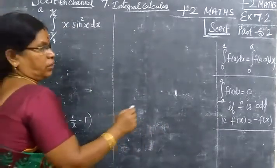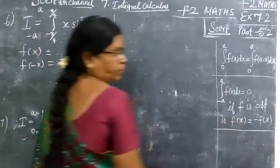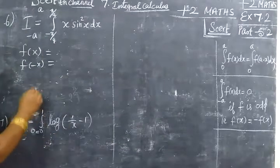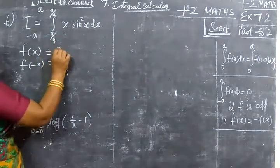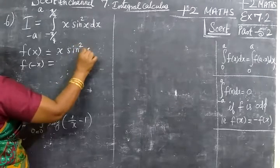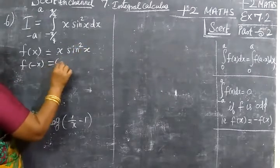This is the problem. f(x) equals x sin squared x. Then f of minus x.